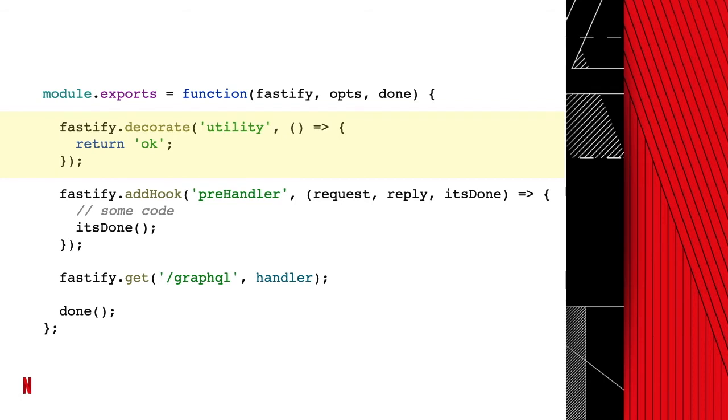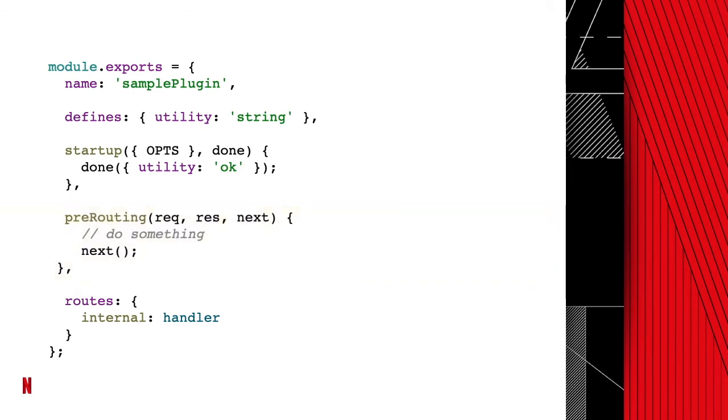For comparison, this is a Fastify plugin. This is how you decorate Fastify, this is how you add a pre-handler hook, and this is how you add a route from a plugin — pretty simple. And this is how a Node Quark plugin looks like. This is how you initialize a plugin and decorate the Node Quark platform. The optional 'defines' key can be used for runtime type checking of the decorated object. This is how you define a pre-routing hook, which is similar to the pre-handler hook of Fastify. And finally, this is how the plugin defines a route.